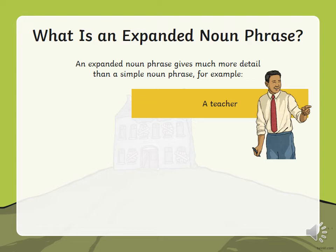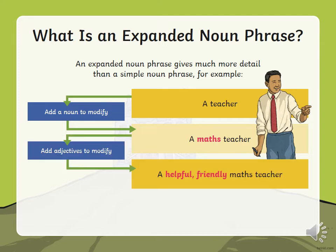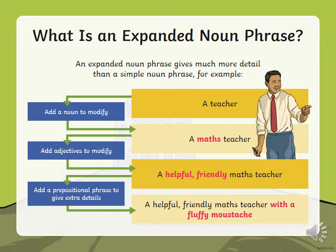So: a teacher. We've added another noun — a maths teacher. Now we need to add adjectives: a helpful, friendly maths teacher. Just by adding these small things, you can see how interesting the sentence becomes. A teacher is quite boring. A maths teacher — ooh! And then a helpful, friendly maths teacher — it starts to describe and the sentence gets really interesting. Now we add the prepositional phrase: a helpful, friendly maths teacher with a fluffy moustache. Just by adding those small details, it becomes very interesting — a lot more than just 'a teacher,' which is very boring. When you're writing, adding these little details makes your writing a lot more interesting and fun to read.